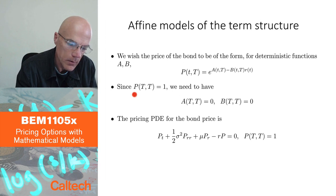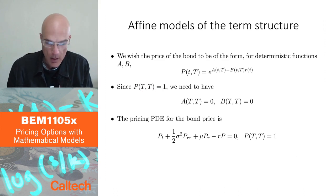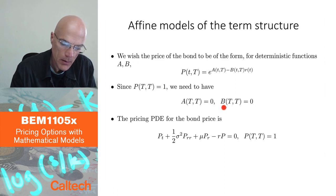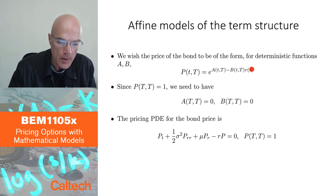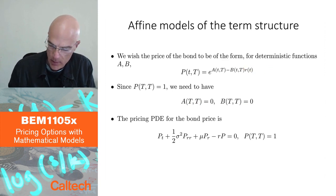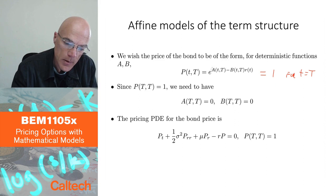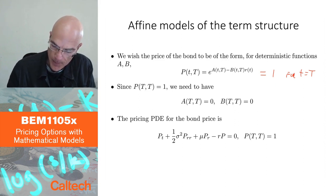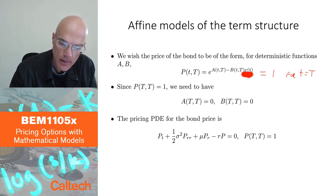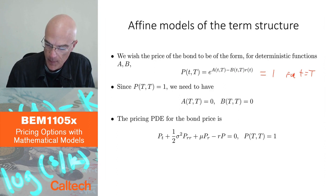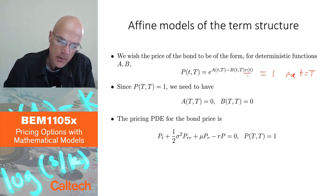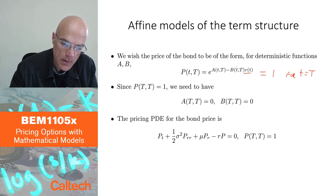We have the boundary condition that at the end the bond pays one dollar, so that means P(T, T) = 1. That actually means that both A and B — both functions — have to be zero at capital T. Why? Because at t = T, the expression has to equal one for every value of R. Since I don't know what R will be, it has to be zero for every value of R, which forces B to be zero, and then A must also be zero.